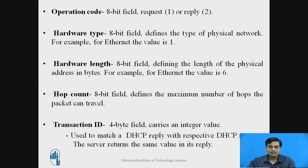The next field is hardware length. This is also an 8-bit field which defines the length of the physical address in bytes. For example, if the network is Ethernet, the hardware address is 48 bits, which means 6 bytes.